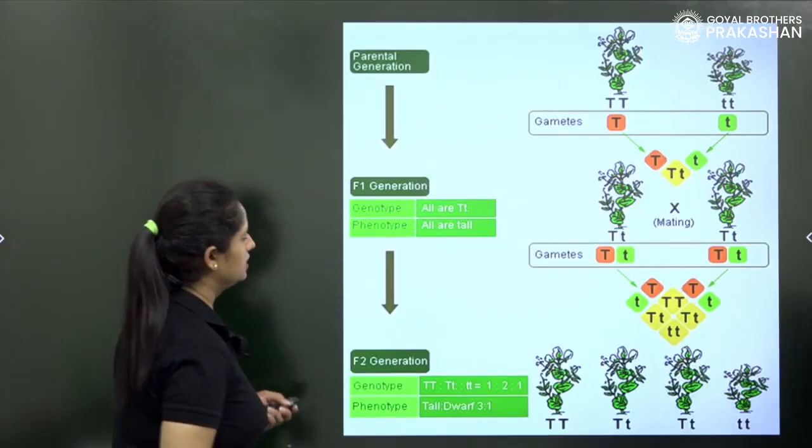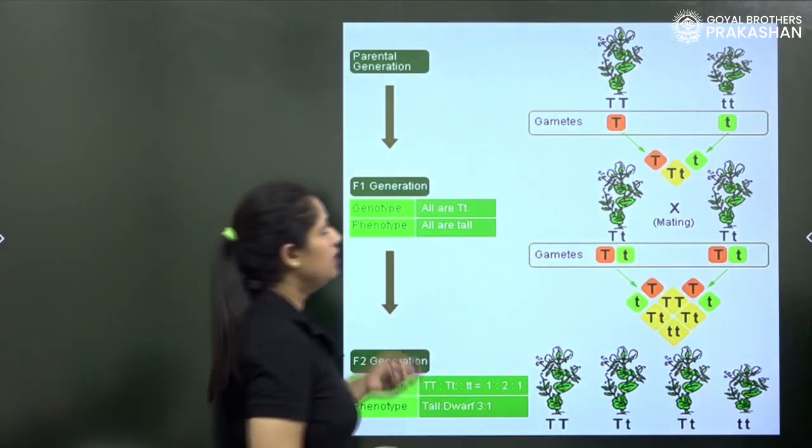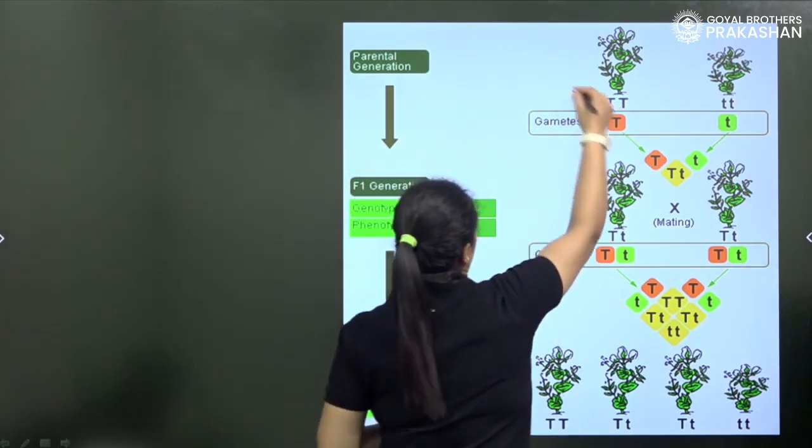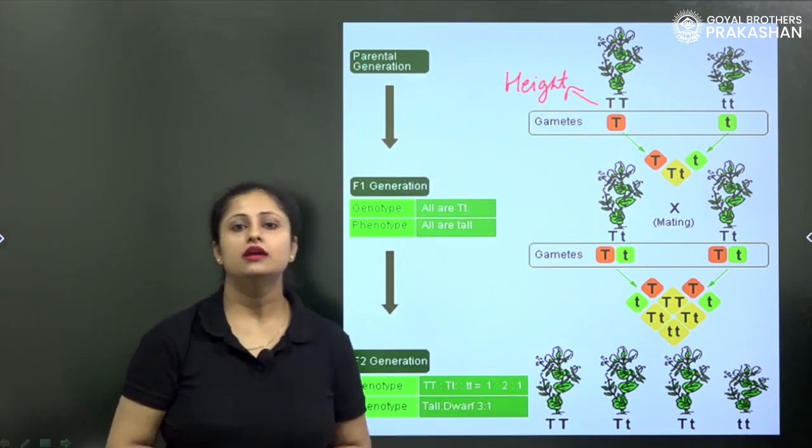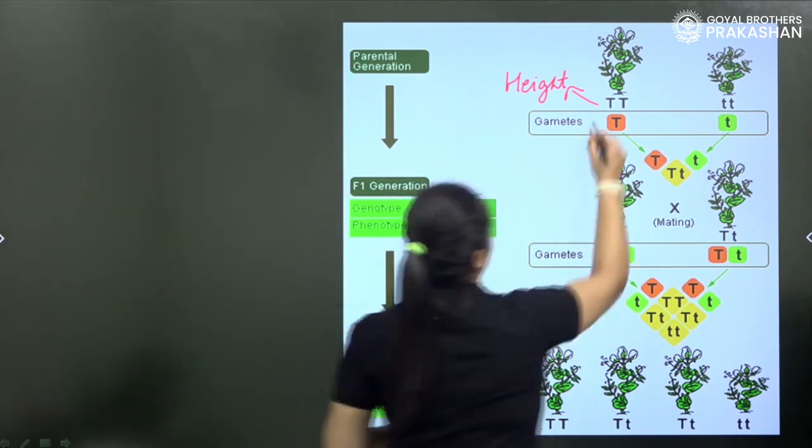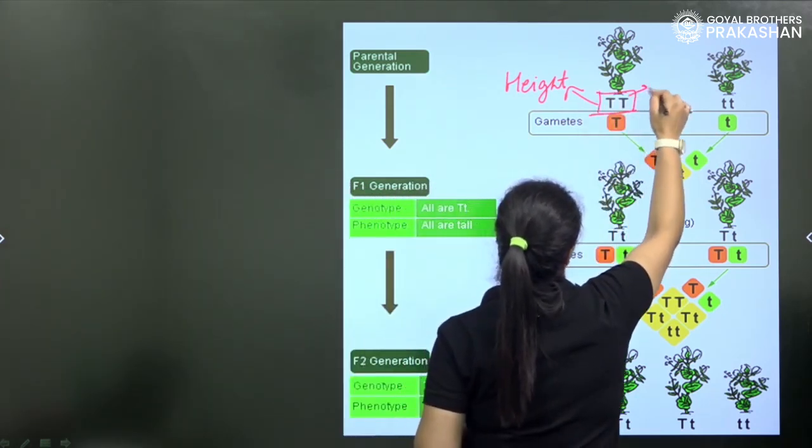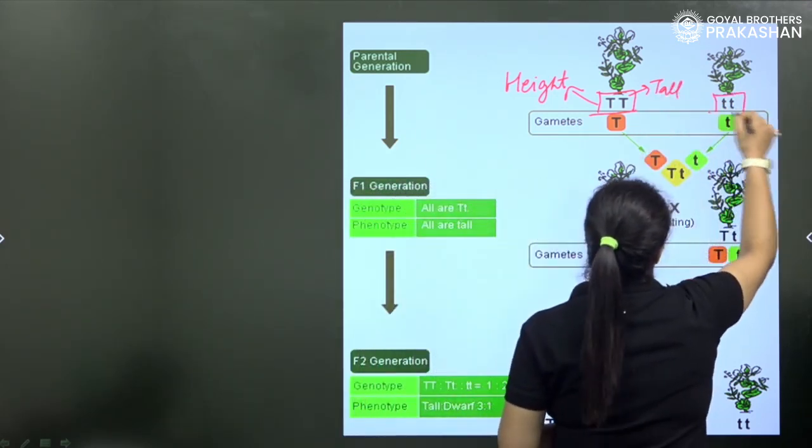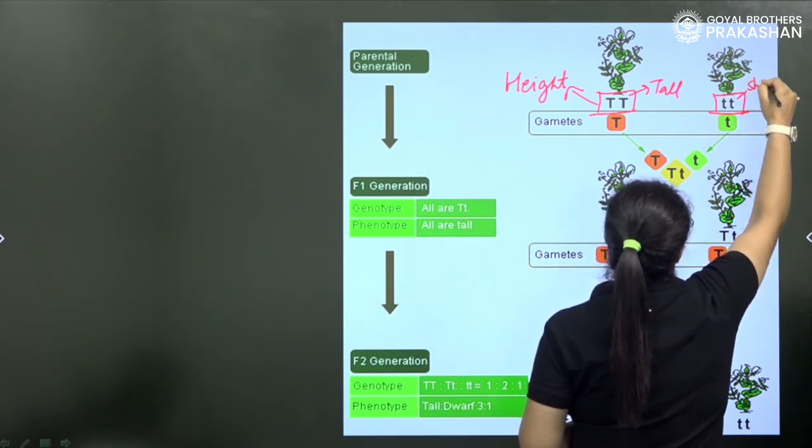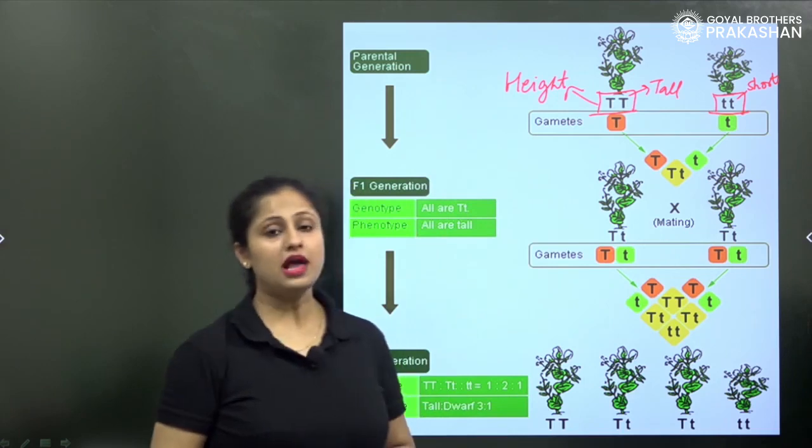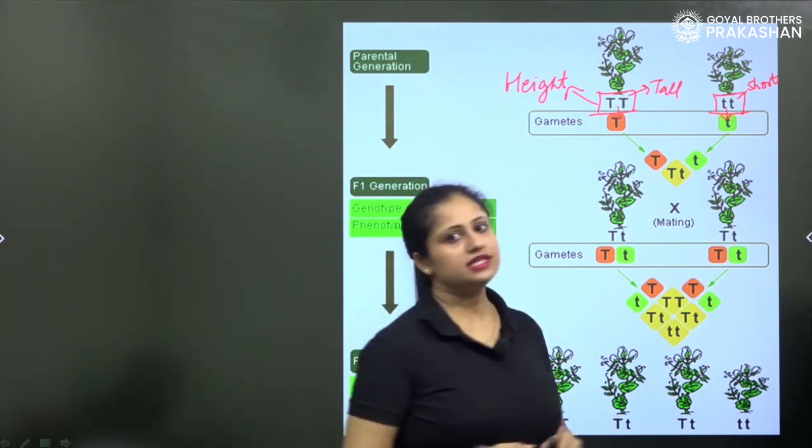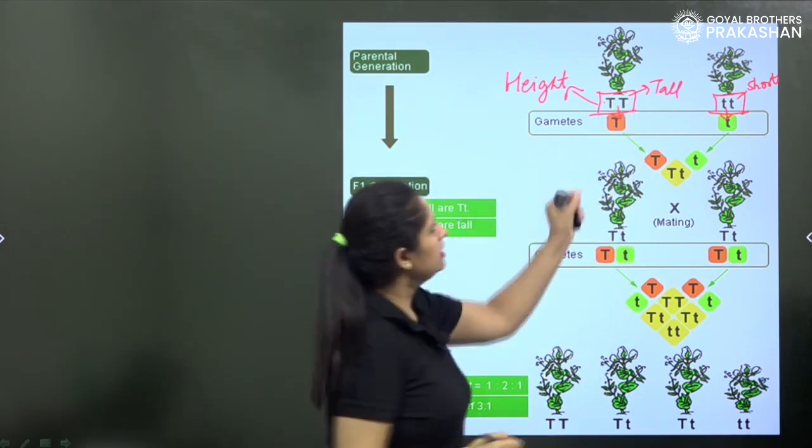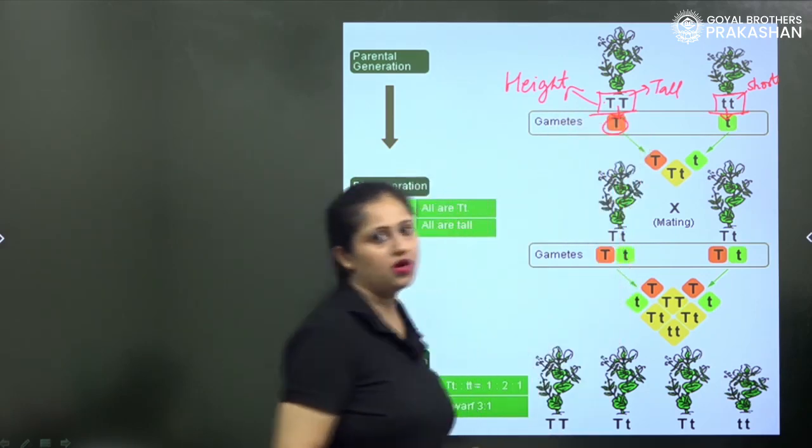Mendel took one pair of contrasting characters and that contrasting character is of the height. Height could be tall or dwarf or short. He took homozygous tall variety of the plant. Another parent is taken as the short or the dwarf variety of the plant.